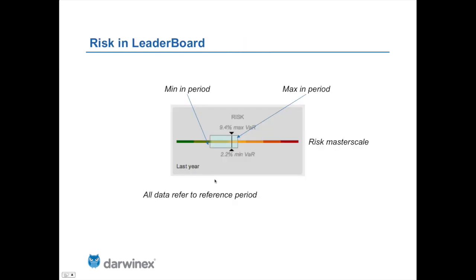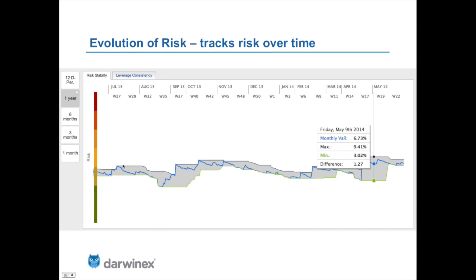You'll also see a risk master scale in the leaderboard with different colors. This window shows the fluctuation of Value at Risk for the particular strategy in the recent period — in this case the last year — where the minimum for the period is shown at one end and the maximum at the other. This transposes the minimum and maximum observations from the previous chart.